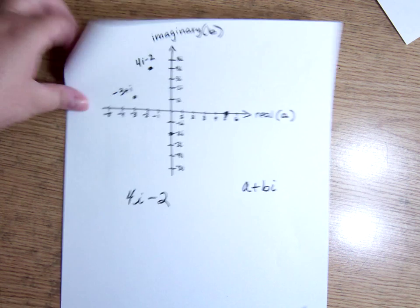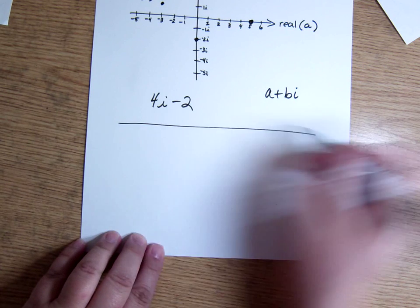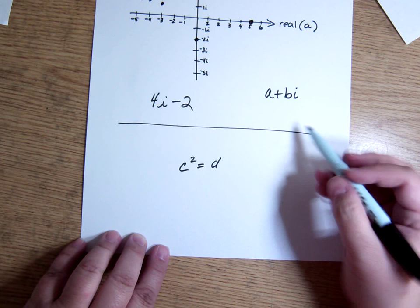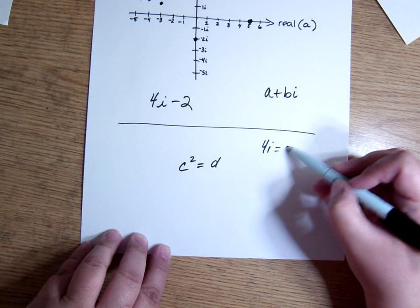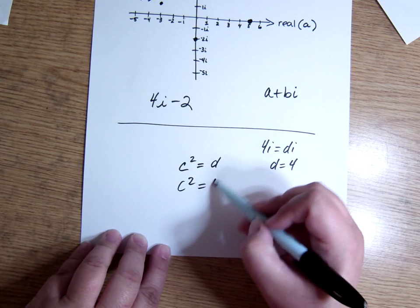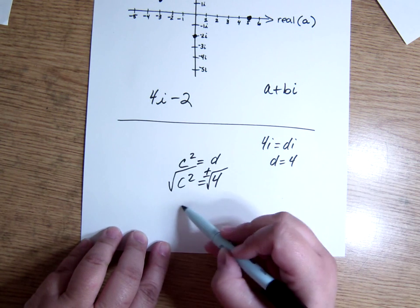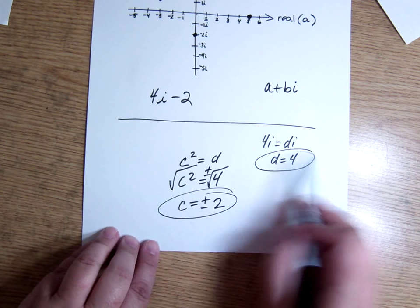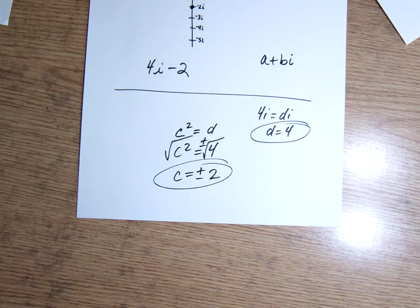On the bonus, the big problem most people had was c squared equals d. Most of you figured out correctly, since 4i equals di, d must equal 4. If c squared equals 4, when I take the square root of both sides, I have to put plus or minus. So c is plus or minus 2. It's not just 2. So that's one of the solutions. And you have to have it. You can't have just part of the solution. It's not complete without both the positive 2 and the negative 2. And that's page 4.